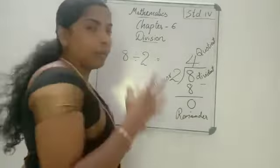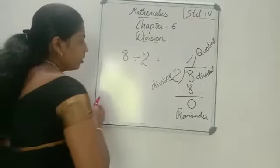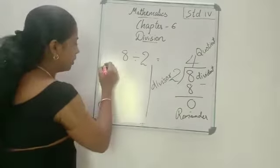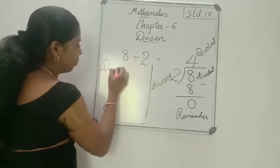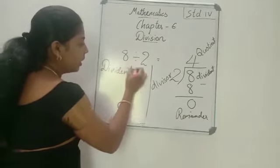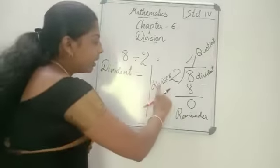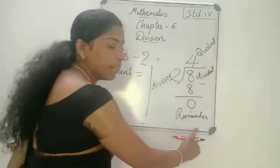Okay, now let us see one more relation. We can say that this dividend equal to, dividend is equal to, divisor into quotient plus remainder.